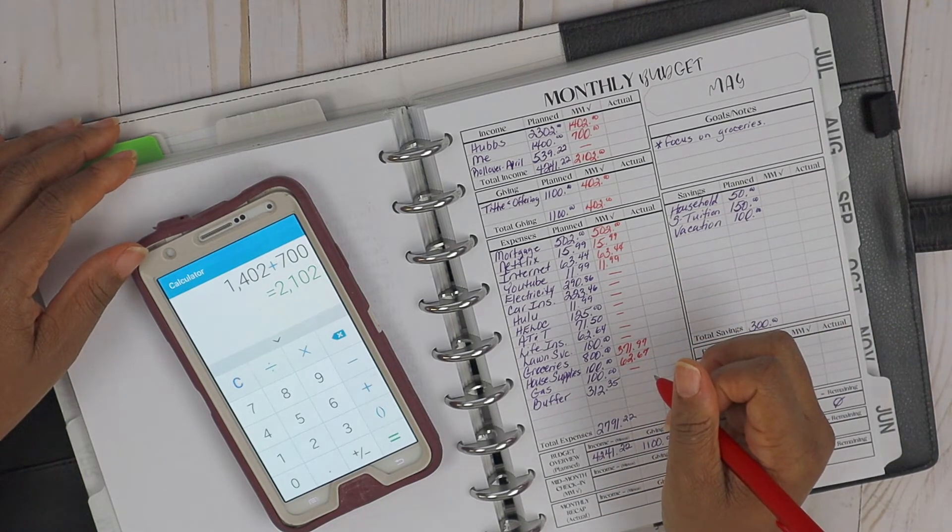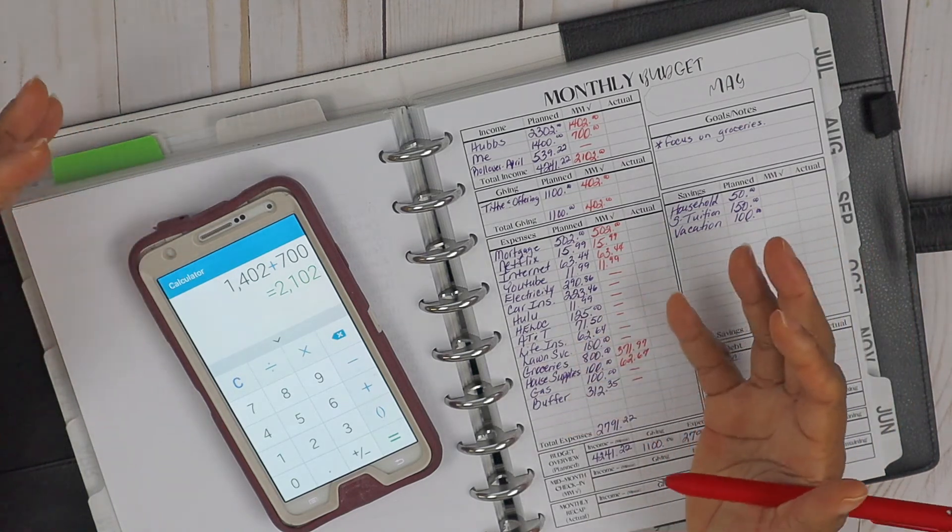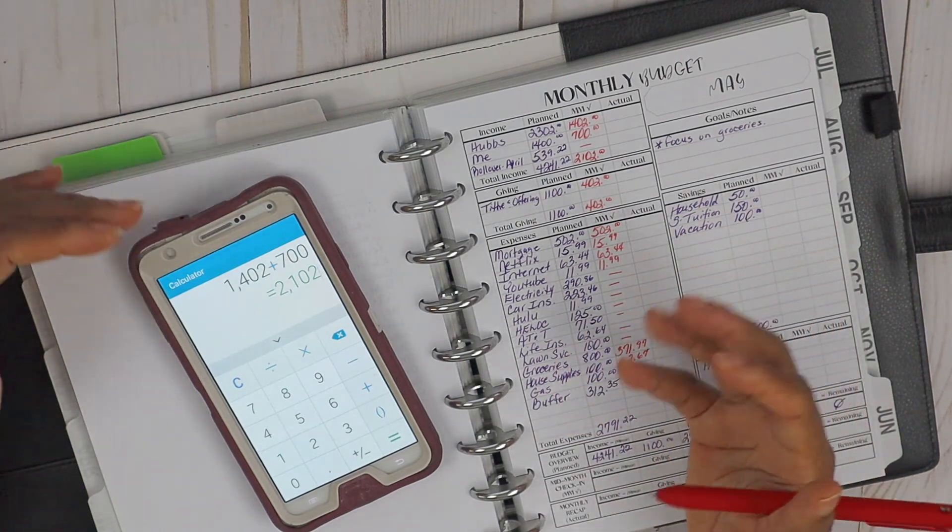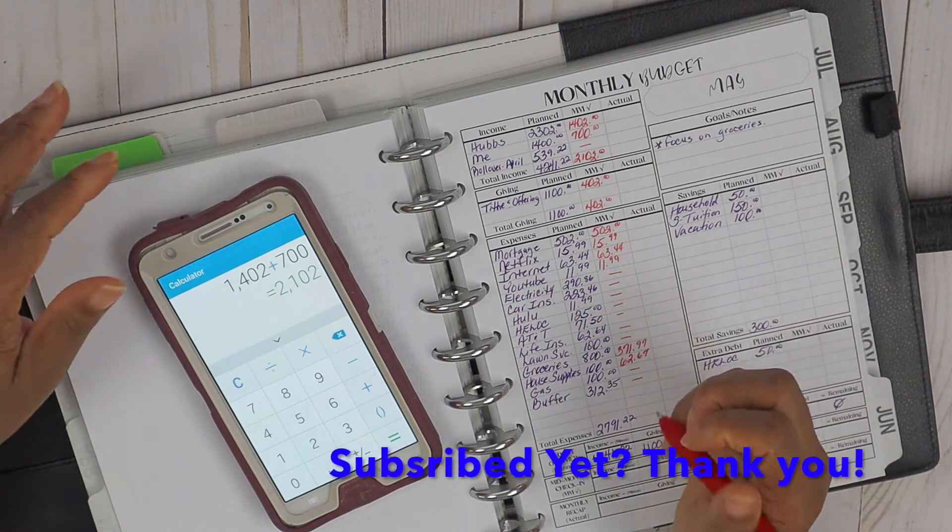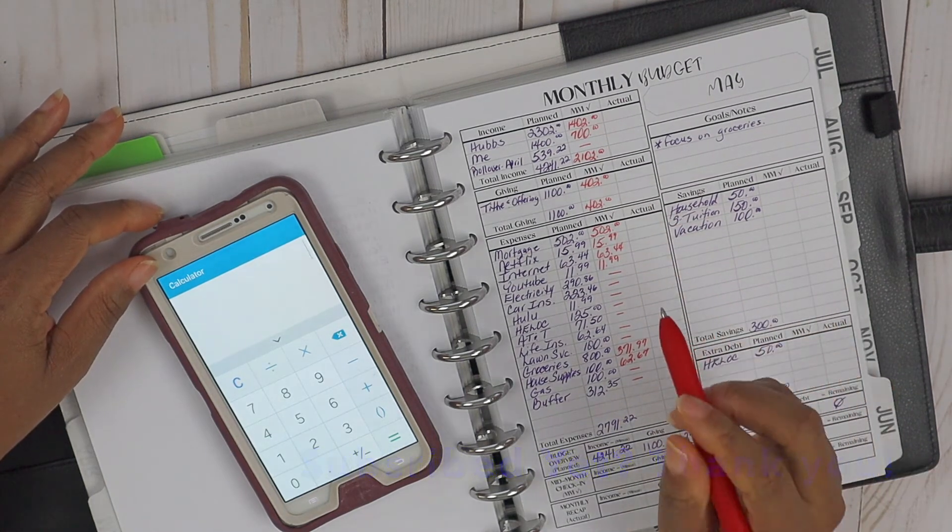As far as our buffer, we didn't have to use our buffer. There was no expenditures that came up that we had not tried to account for. All right, so what I'm going to do is total these expenditures, and I will see you back in a bit.